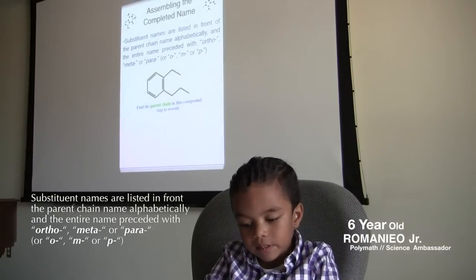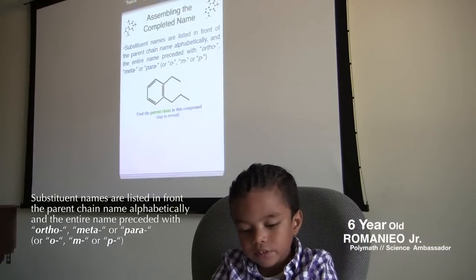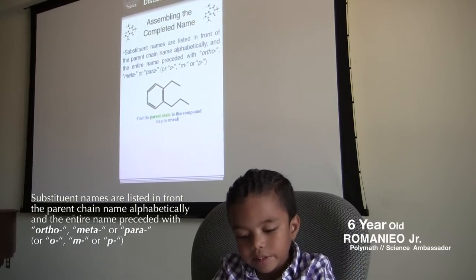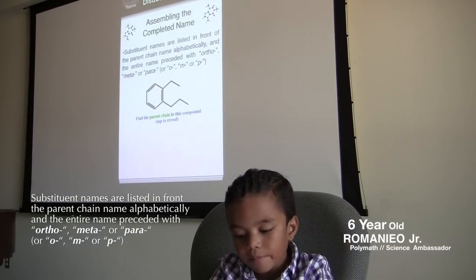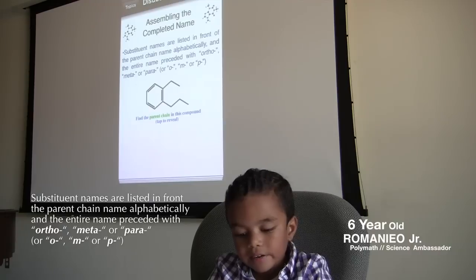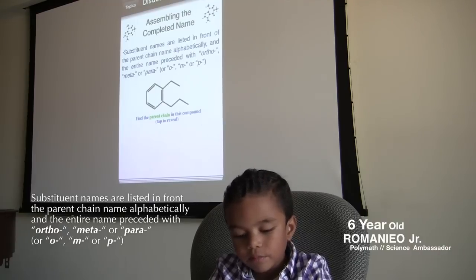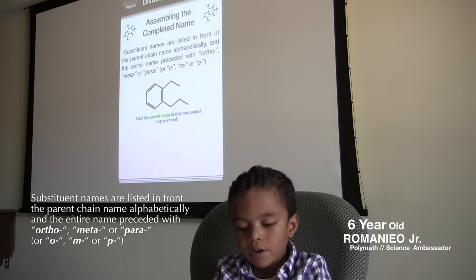This is very simple. Substituent names are listed in front of the parent chain name alphabetically, and the entire name is preceded with ortho, meta, or para.